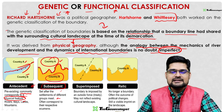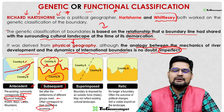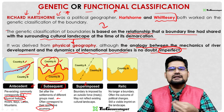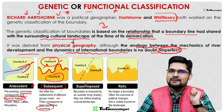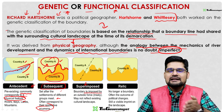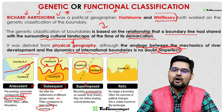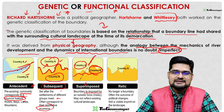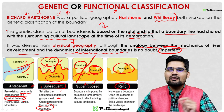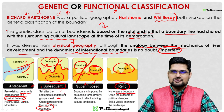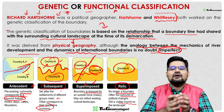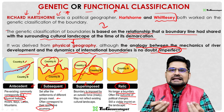Subsequent boundaries reflect culturally and ethnically separated peoples. Then there are superimposed boundaries — where an outside force, such as in a colonial context or treaty, separates two sides that may be culturally similar, creating a boundary between Country A and B despite their similarities. Finally, relic boundaries are those that no longer function as boundaries in the present but have past imprints visible on the landscape — often an outcome of political changes.